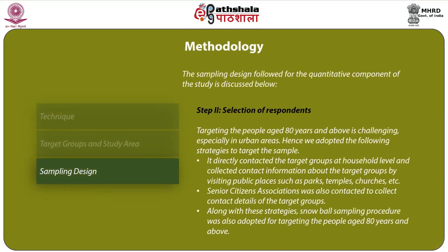Step 2 involved selection of respondents. Targeting people aged 80 years and above is challenging especially in urban areas, hence the survey adopted the following strategies: it directly contacted the target groups at the household level; contacted them by visiting public places such as parks, temples and churches; senior citizen associations were also contacted to collect contact details. Along with these strategies, snowball sampling was also adopted for targeting people aged 80 years and above.